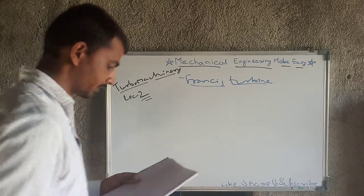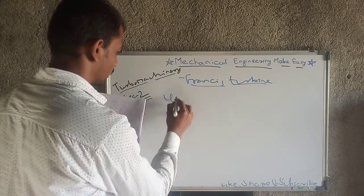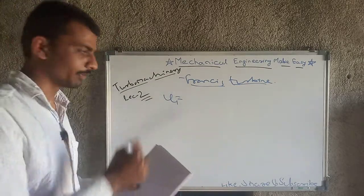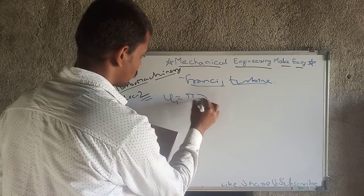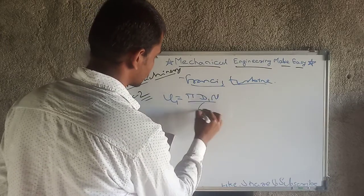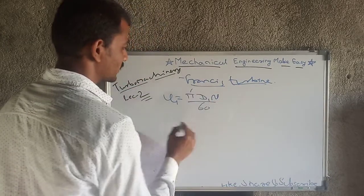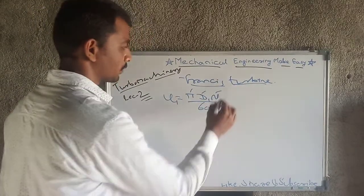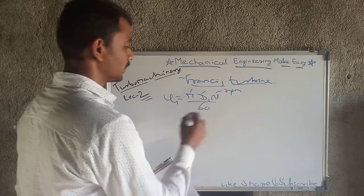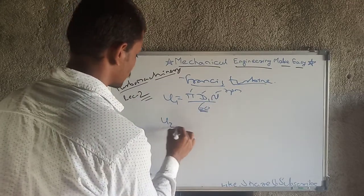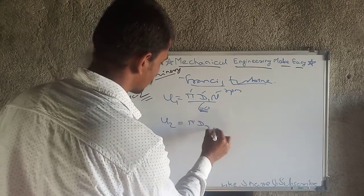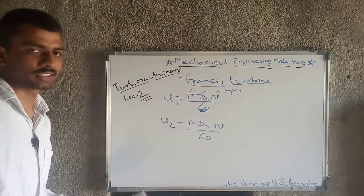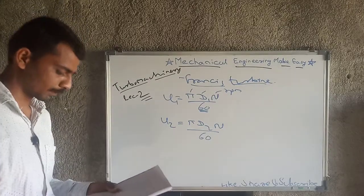Next: U1 (wheel velocity at inlet) = π·D1·N / 60, where D1 is the diameter of wheel at inlet and N is the RPM of the wheel. Similarly, U2 = π·D2·N / 60. Note down both these formulas — they are very important.